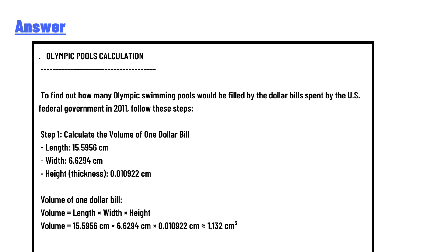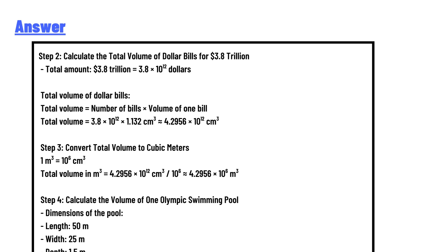Step 2: Calculate the total volume of dollar bills for 3.8 trillion dollars. Total amount: 3.8 trillion equals 3.8 times 10 to the power of 12 dollars. Total volume of dollar bills equals number of bills multiplied by volume of one bill, which equals 3.8 times 10 to the 12th multiplied by 1.132 cubic centimeters, giving approximately 4.2956 times 10 to the 12th cubic centimeters.